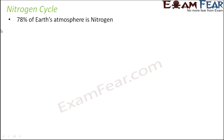Now let us talk about the next cycle which is the nitrogen cycle. Nitrogen is the most abundant element in the earth's atmosphere — 78% of the earth's atmosphere.